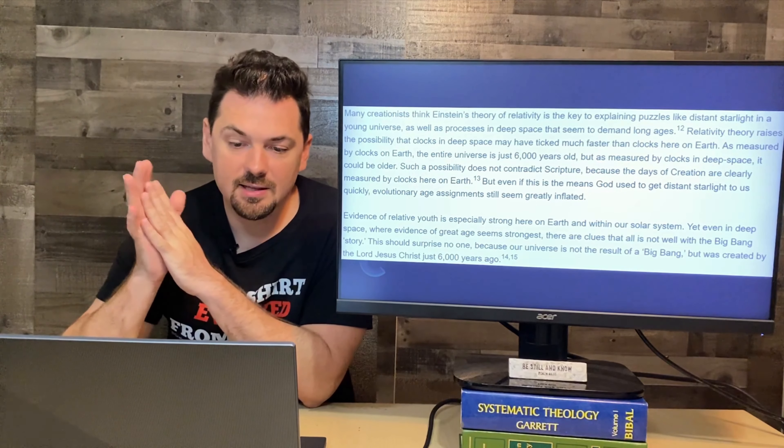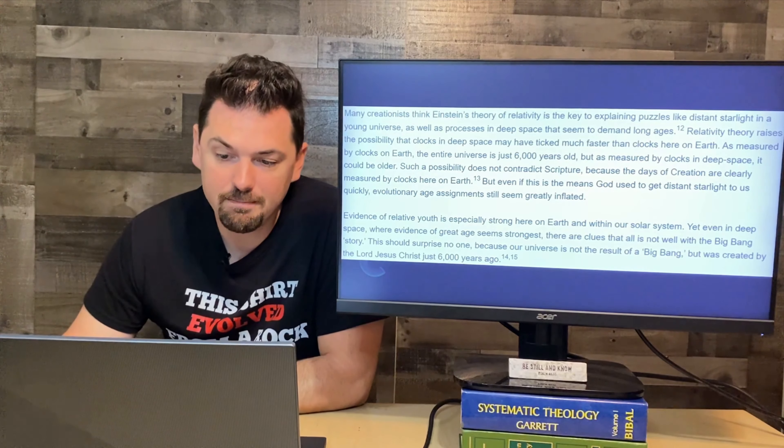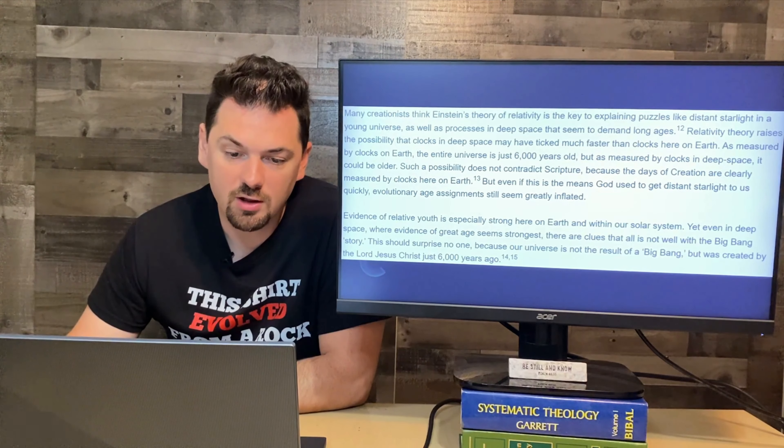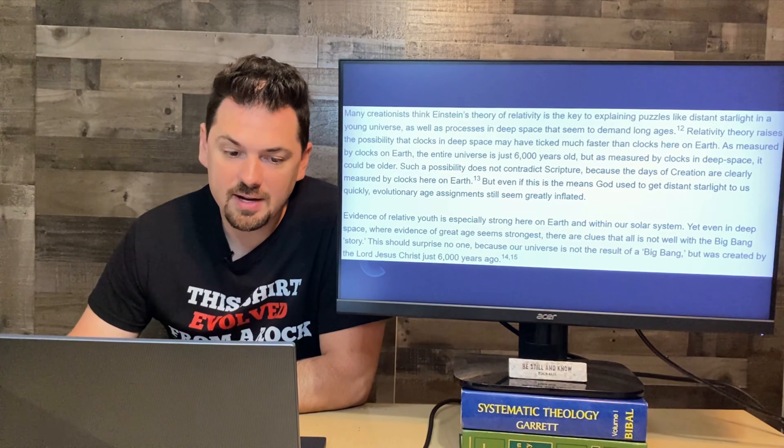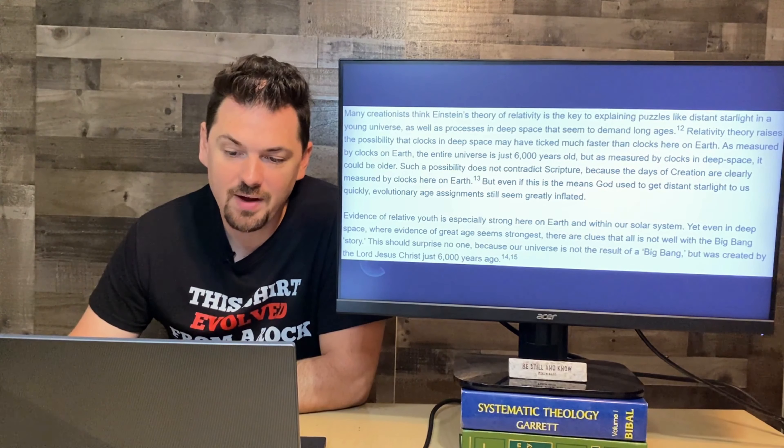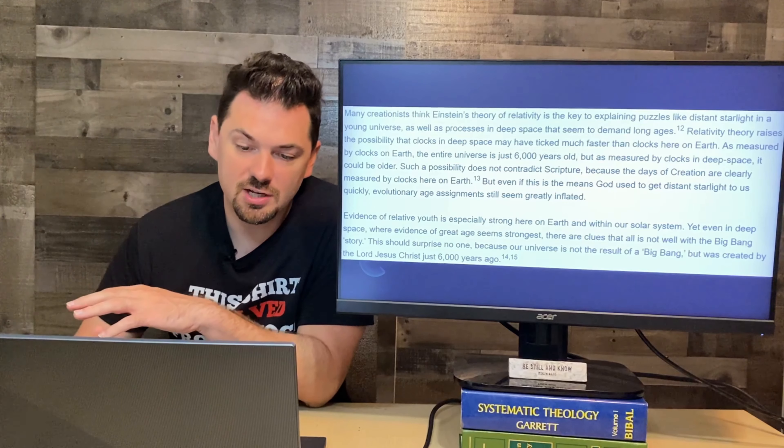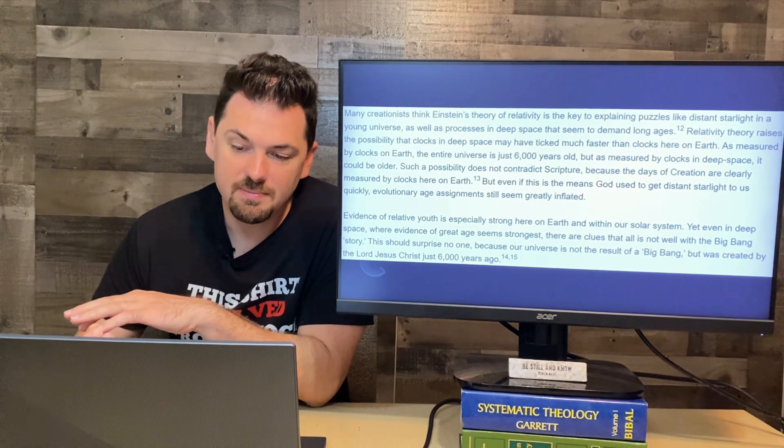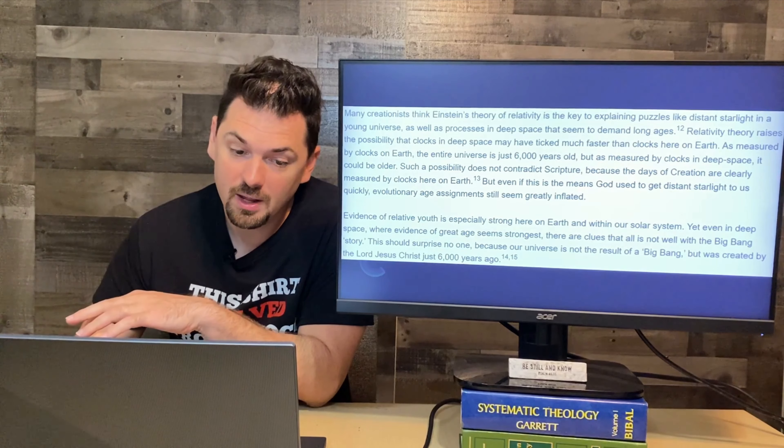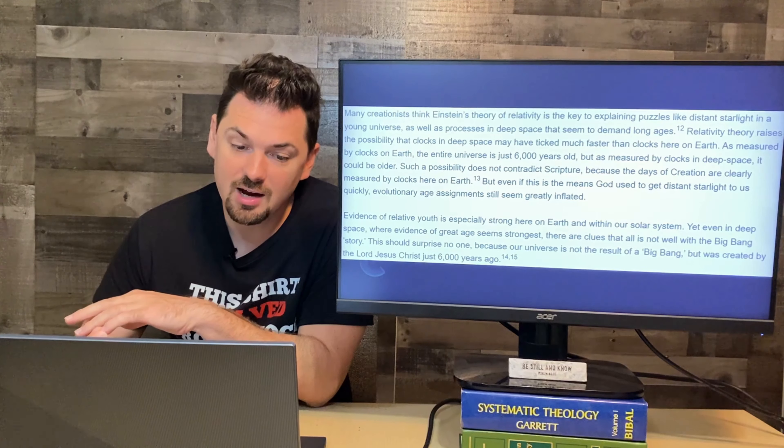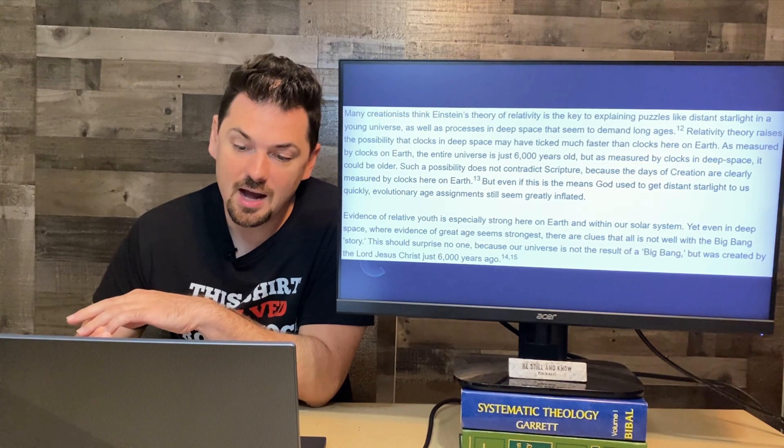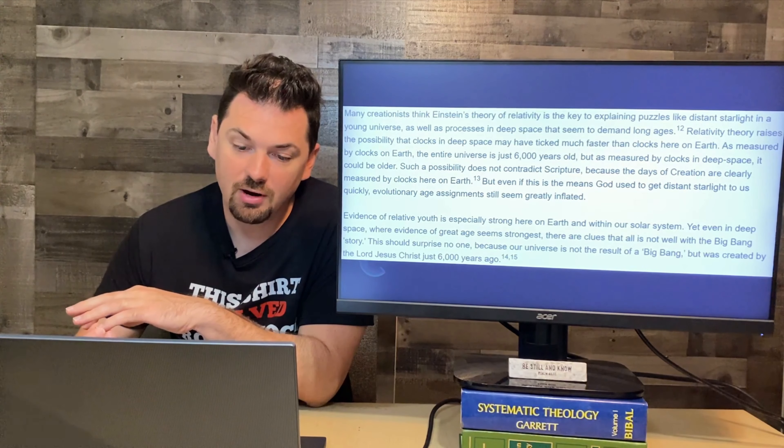Many creationists think that Einstein's theory of relativity is the key to explaining puzzles like distant starlight in a young universe, as well as processes in deep space that seem to mean long ages. Relativity theory raises the possibility that clocks in deep space may have ticked much faster than clocks here on Earth. As measured by clocks on Earth, the entire universe is just 6,000 years old, but as measured by clocks in deep space, it could be much older. Such a possibility does not contradict scripture because the days of creation are clearly measured by clocks here on Earth. But even if this is the means God used to get distant starlight to us quickly, evolutionary age assignments still glean greatly inflated.